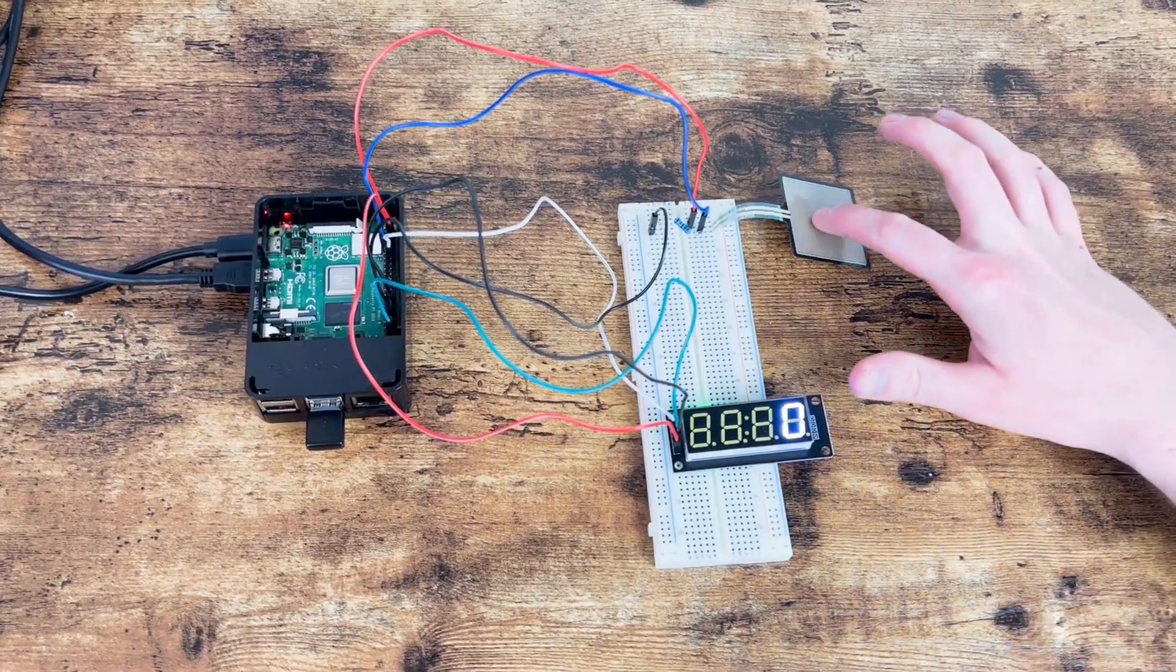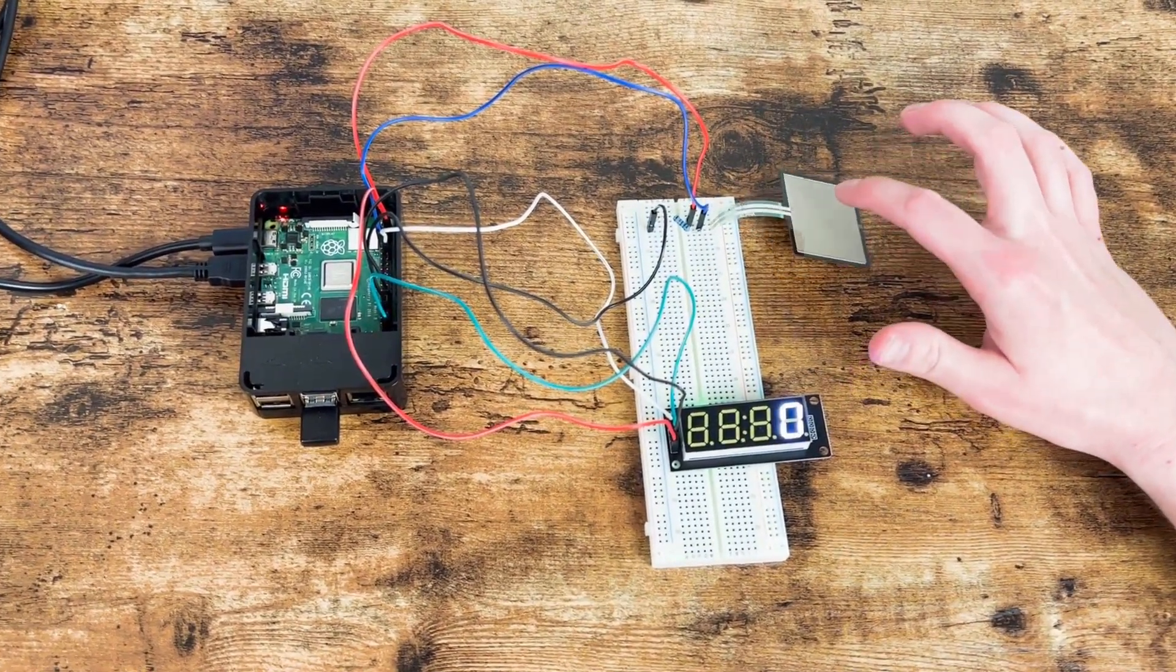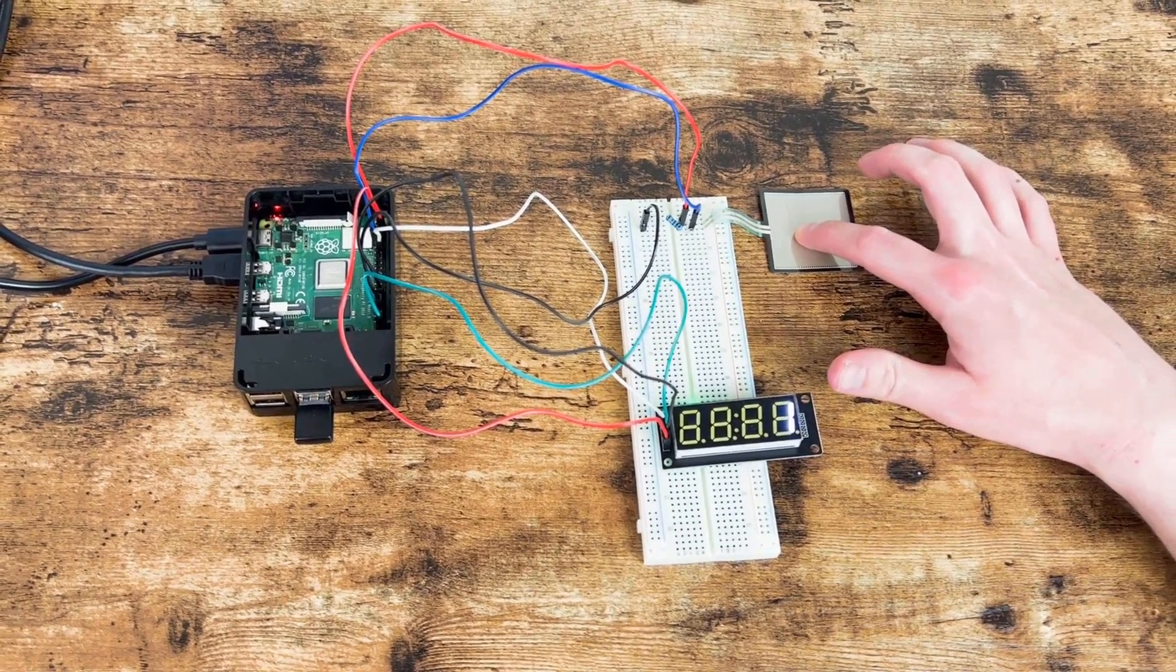By connecting this resistor to my Raspberry Pi 4 and running a short Python script, I'm able to detect whether or not the FSR is being pressed.